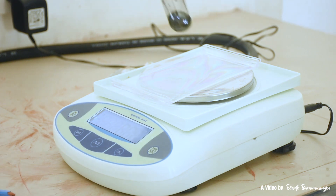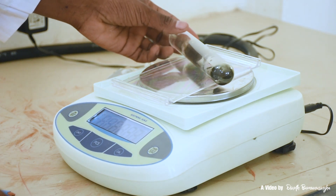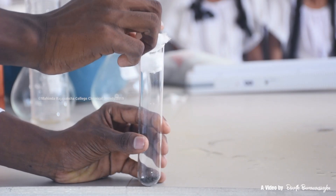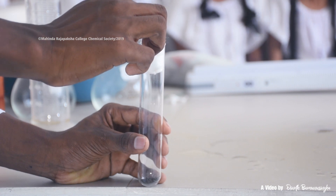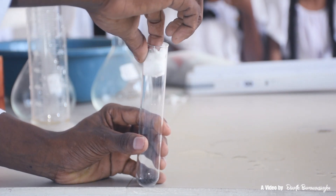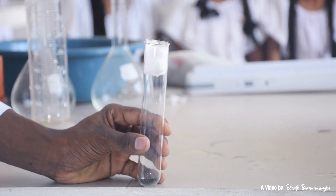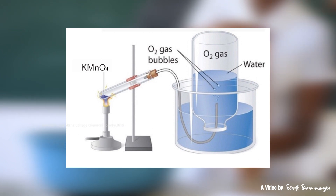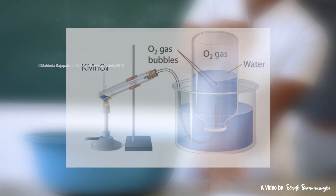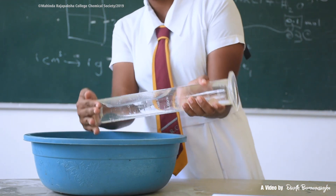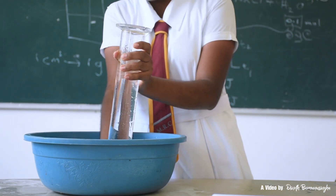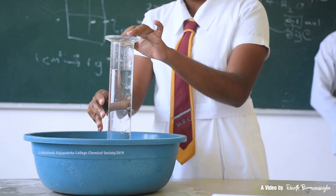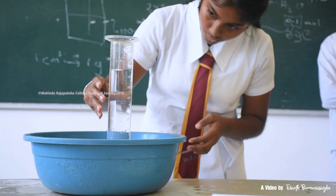First, weigh about 5 grams of dry potassium permanganate and transfer it into the dry boiling tube. Then, insert a cotton wool plug closure to the top of the boiling tube in order to avoid the evaporation of potassium permanganate. Next, arrange the apparatus as shown in the figure. Measure the initial water level of the inverted measuring cylinder and record it.